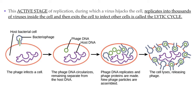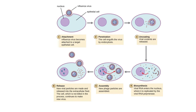Once inside, viral replication can take one of two forms. The active stage is called the lytic cycle. During the lytic cycle, the viral genetic material hijacks the cell's machinery into reading the viral genetic information and using it to make hundreds of new viruses. Once made inside the cell, the viruses completely fill the cell and the cell will burst or lyse, releasing the viruses. Alternatively, viral particles can be released without killing the cell, leaving it as a viral factory. Eventually either the immune system destroys the virus, or the virus continues to be produced, causing cellular damage and eventually killing the organism.